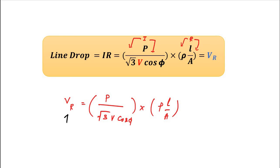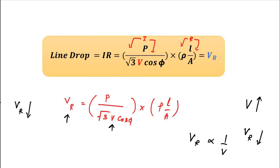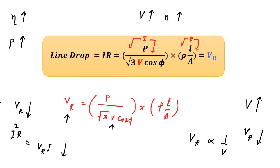The voltage drop is inversely related to the transmission voltage. When transmission voltage increases, the voltage drop across the conductor decreases. When voltage drop decreases, the I²R power loss — which equals V_R × I — also decreases. When power loss decreases, efficiency increases as useful output power increases. Therefore, increasing transmission voltage leads to higher efficiency through decreased voltage drop and decreased total power loss.